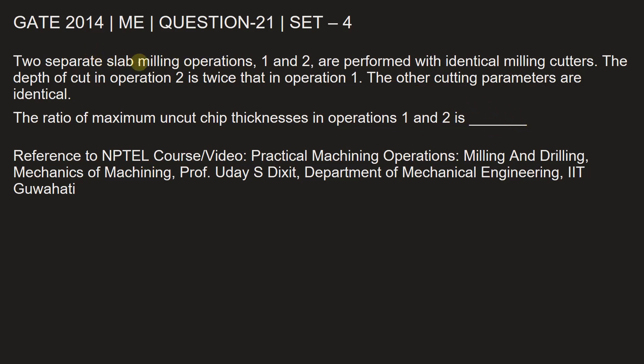We are given that for two separate slab milling operations, the depth of cut in operation 2 is twice that of operation 1. Let the depth of cut be d. So d2 equals twice d1.